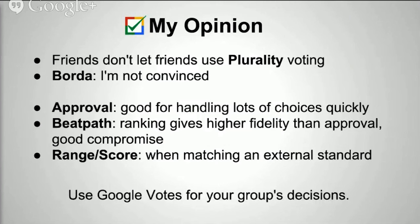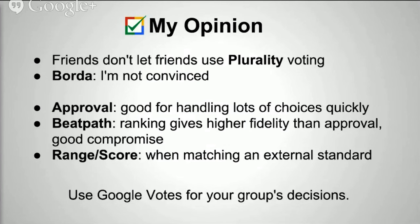Approval voting is pretty good — if you need things done quickly with little cognitive overhead, give people multiple-choice checkboxes. For the food fair with 200+ options, people just clicked what they liked and moved to the next screen, and we got decent results. BeatPath is a pretty good algorithm when you want more fidelity than approval, since approval can't express 'I like this more than this.' If it's just my default algorithm, I'd go with BeatPath. When in doubt, give people a ranking and use BeatPath — it'll give you a pretty good result.